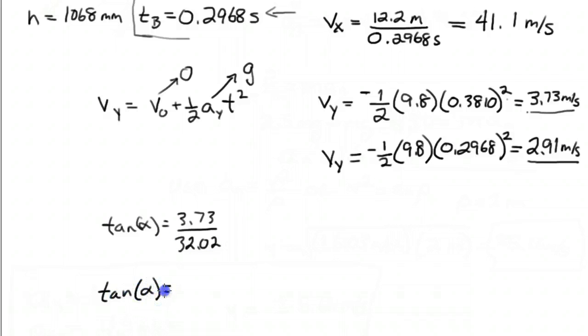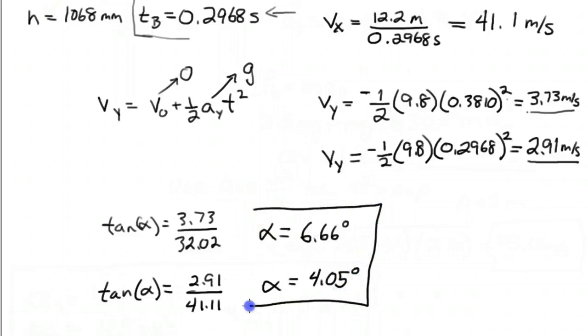In the second case, the tangent of that angle is 2.91 divided by 41.11. So we can calculate. Alpha in the first case is 6.66 degrees, and in the second case, 4.05 degrees. So there we go, that's the solution to part B of this problem.